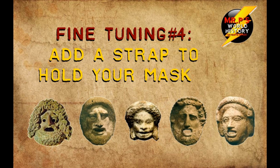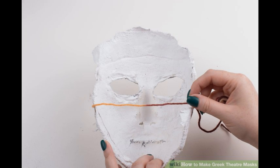Five. Finally, add an elastic or yarn strap so that you can wear your mask. Poke holes on each side of the mask, string elastic or yarn through one of the holes, then tie it to secure it. Do the same on the other side. Adding elastic allows you to wear your mask without holding it up so that you can use your hands freely.